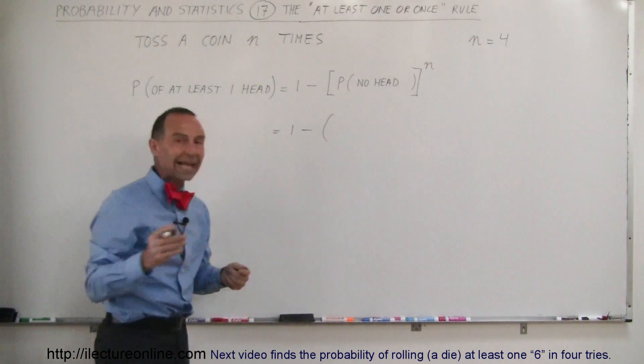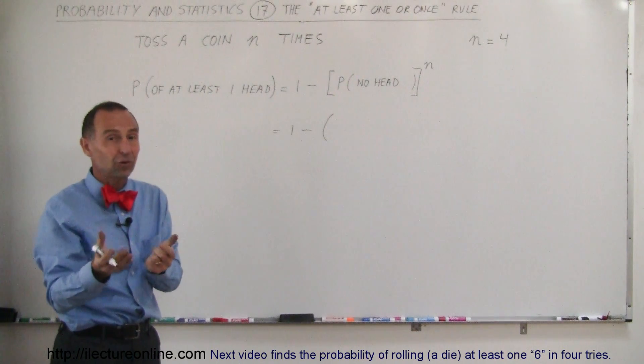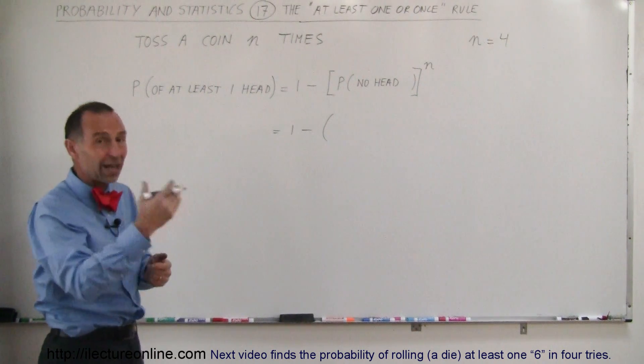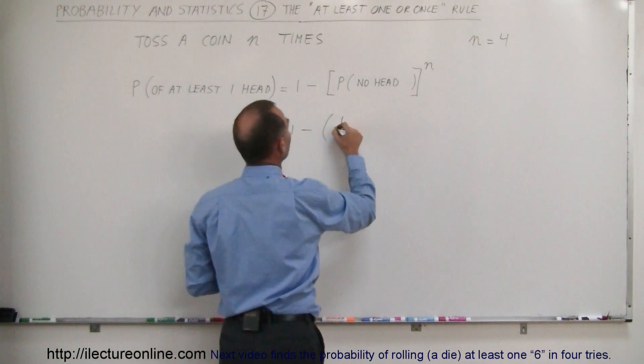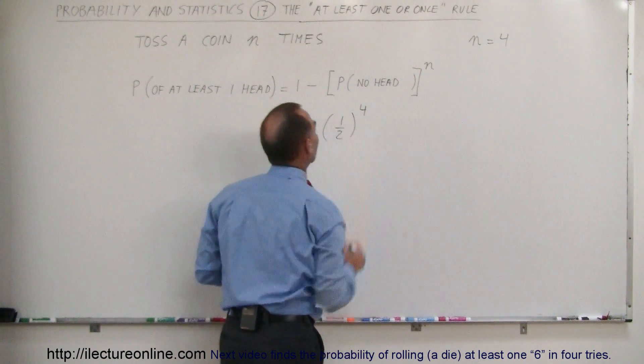Well, it can either be heads or tails, so there's a 50-50 chance. So one out of two is the possibility that we get no head, and since you're tossing it four times, you raise that to the fourth power.